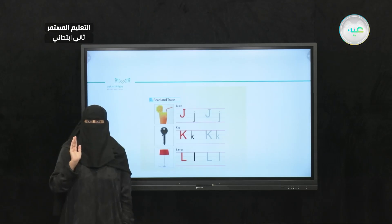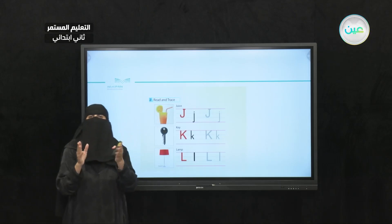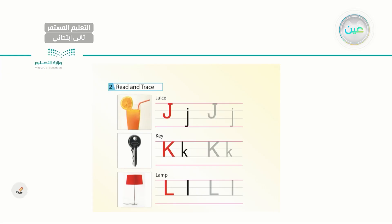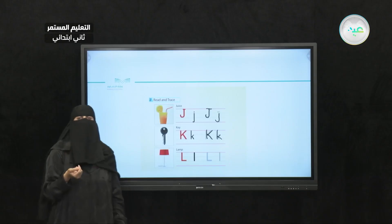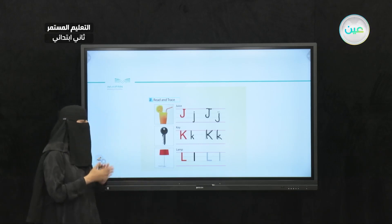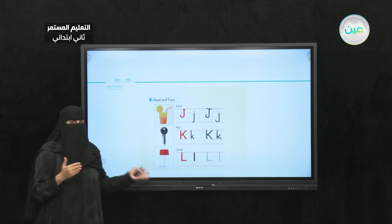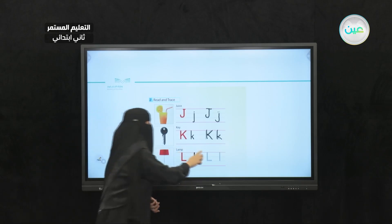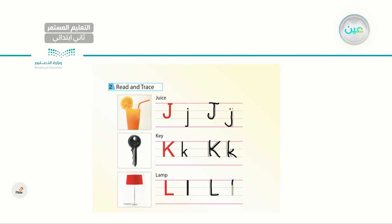Now let's go to the next set of letters. I know some of you can name the first one — it is juice. Capital J and small j. It's not G — it's JA, J. Juice. Next letter is K. Capital K and small k. The word here is key — a tool that we use to open doors. Next one is lamp, just by looking at the picture. I have capital L and small l. So here I have J, K, and L.